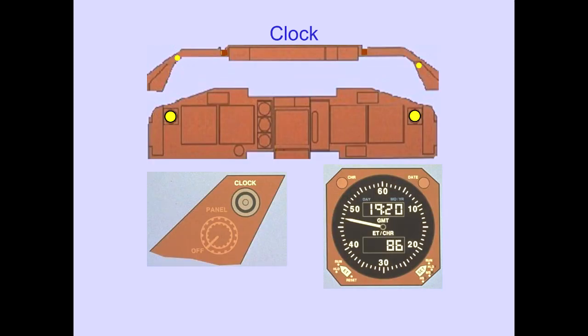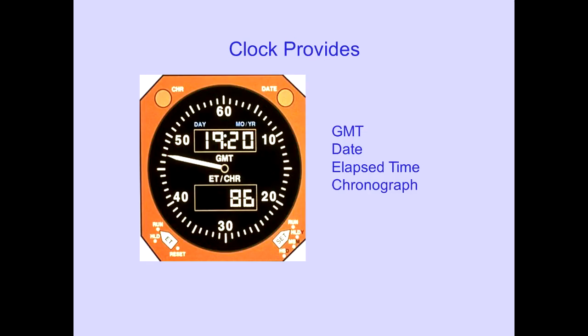Clocks are located on the Captain's and First Officer's panels. A clock switch for each clock is located on the glareshield. The clocks provide GMT, date, elapsed time, and chronograph functions.